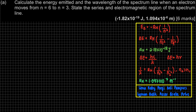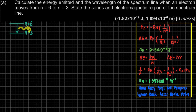Getting back to the question: calculate the energy emitted, so that is delta E, for an electron moving from n=6 to n=3. The electron falls from n=6 to n=3, and when it falls, energy is produced in the form of light — we call it a photon. We're going to use the formula delta E = RH × (1/n_initial² - 1/n_final²), where initial is the higher energy level and final is the lower energy level.